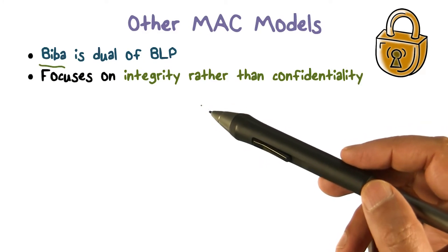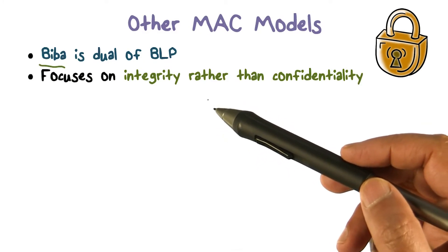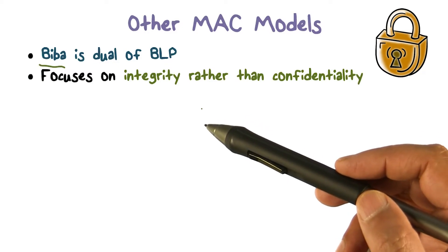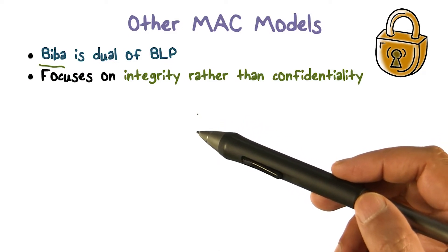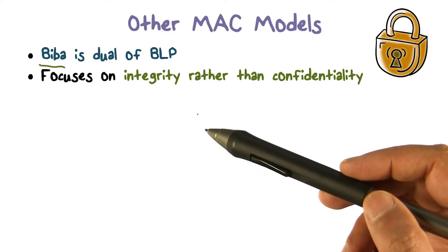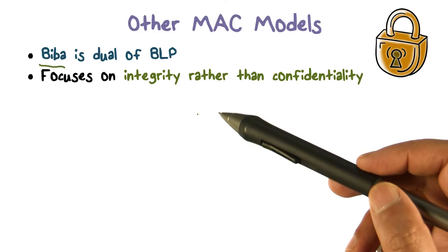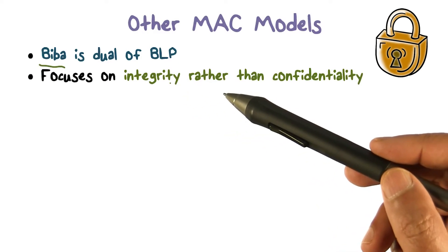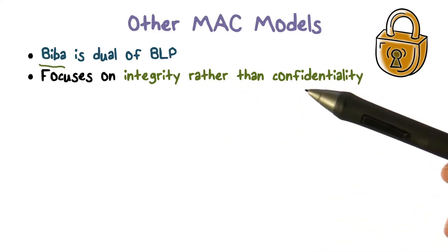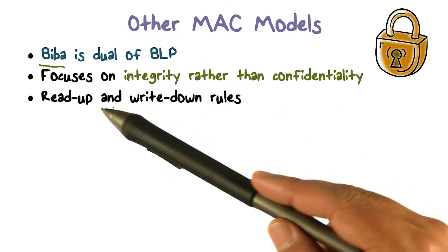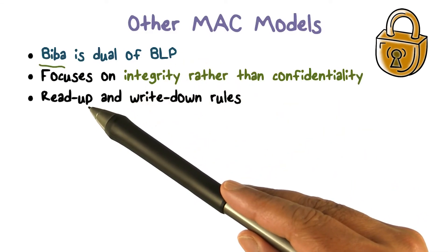Integrity is defined in terms of someone being able to write or corrupt data. The interpretation is that when you say it's top secret information, it really is top secret information. The information indeed should be at that level. Think of it as quality of information rather than disclosure of information, which is what confidentiality focuses on. So it's dual because the rules are actually opposite of what we had in BLP.